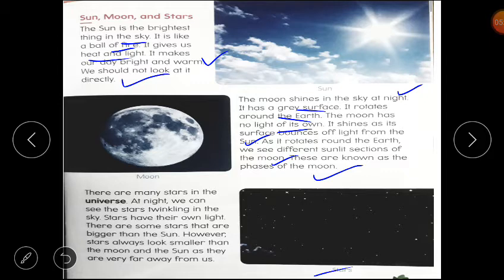Stars. There are many stars in the universe. At night, we can see the stars twinkling in the sky. Night mein humein stars twinkling karte hue nazar aate hai, chamakte hue nazar aate hai. Stars have their own light. There are some stars that are bigger than the sun. Kuch stars aise hai jo ki sun se bhi big hai. However, stars always look smaller than the moon and the sun as they are very far away from us. Woh hamein chhote kiyo nazar aate hai kyunki woh hamari earth se bohot zyada dur hai. Isliye woh hamein chhote nazar aate hai. I hope lesson is clear to you all.